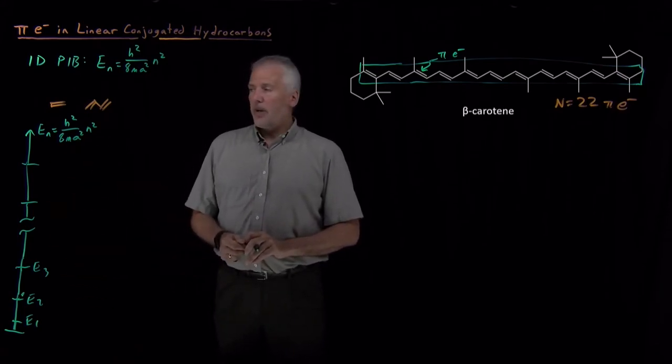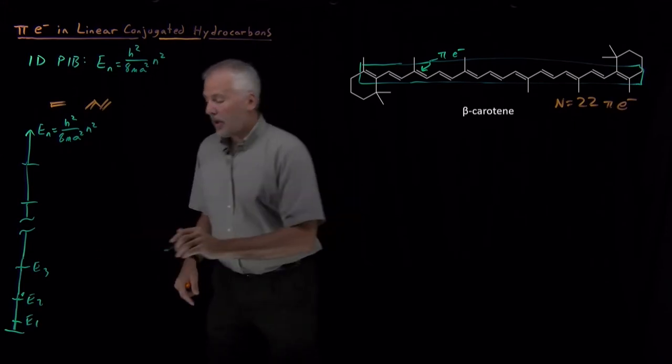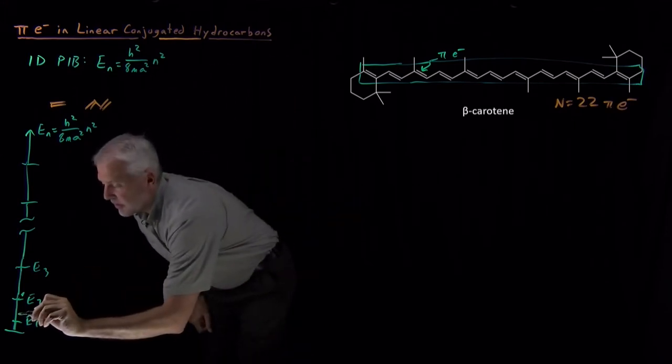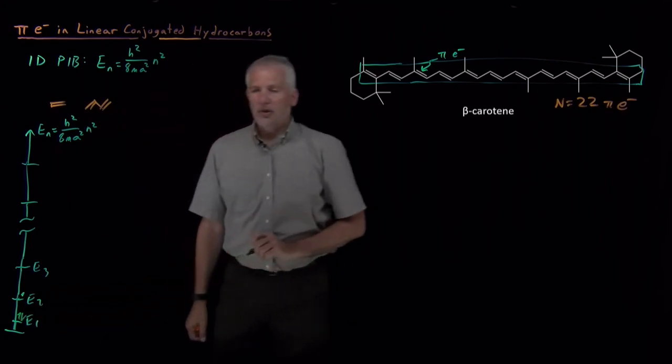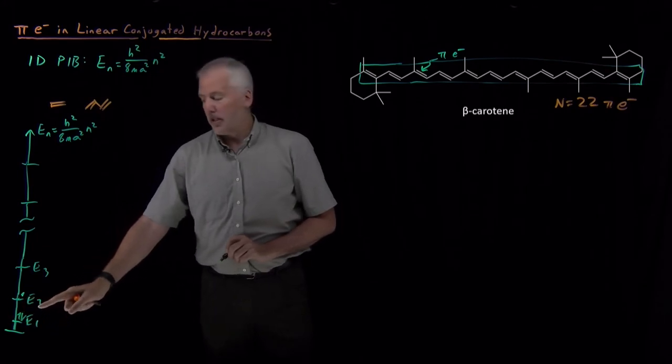We have to think back to the rules you learned in general chemistry with names like the Aufbau principle and Pauli's exclusion rule. So Pauli's exclusion rule tells us, for example, that we can't fit more than two electrons into one orbital. So once I've put two electrons into this E1 level, it's full. I can't put any more.